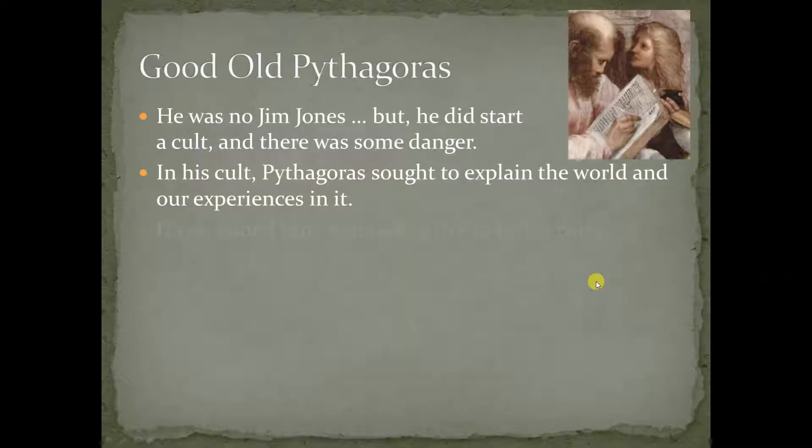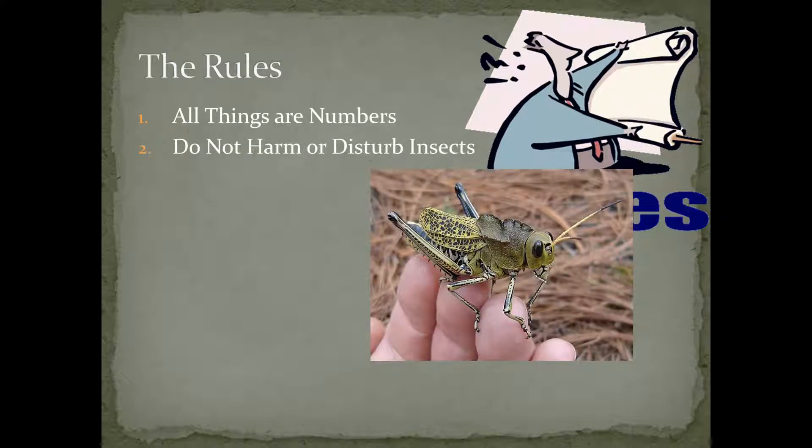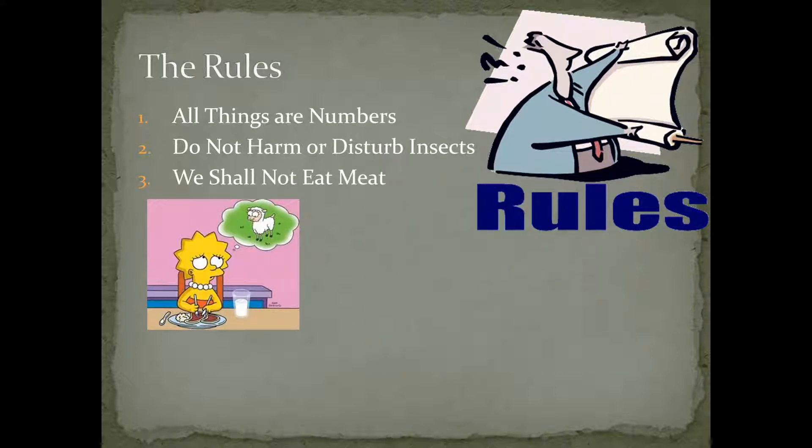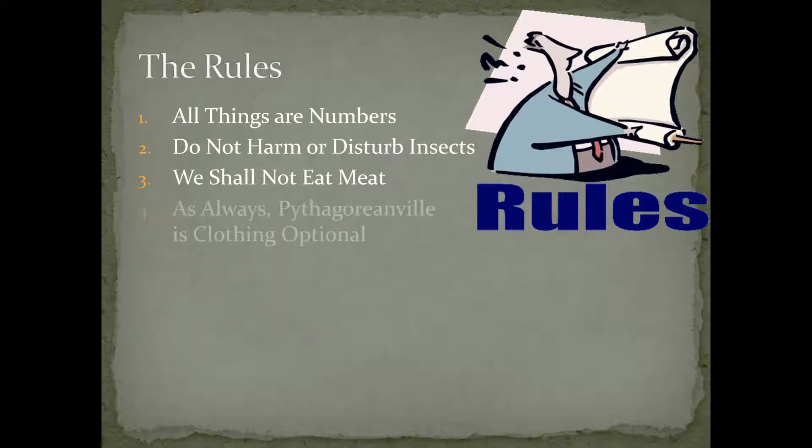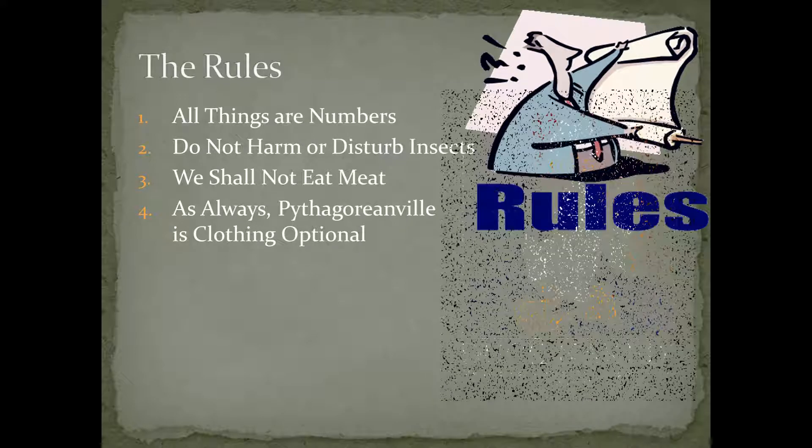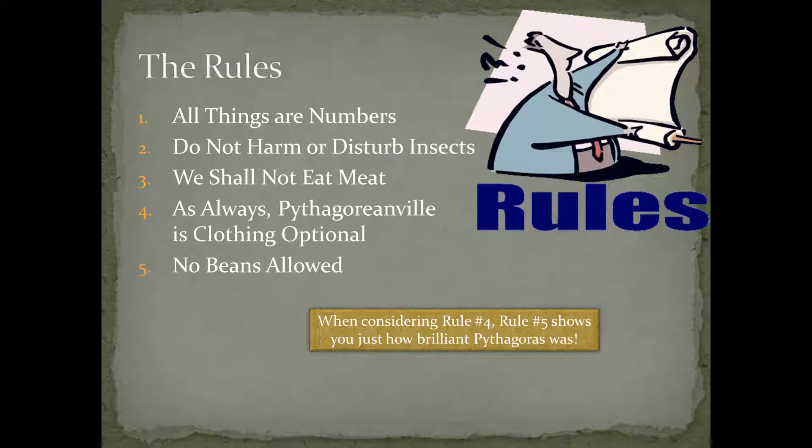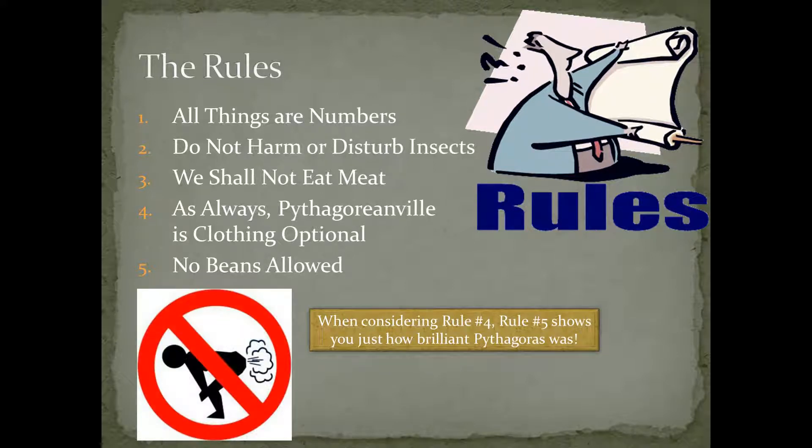Pythagoras wasn't quite that bad. Here's the thing with Pythagoras. He had some rules and you had to live by them. The first rule was, all things are number. Number two, you can't harm insects. Remember, he went to India and reincarnation, big deal. So, if you kill this grasshopper, you might have just killed Nana. No eating meat allowed for the same reason. Number four, clothing, completely optional. And number five shows me how smart Pythagoras really was. When you consider rule number four with rule number five together, good idea.